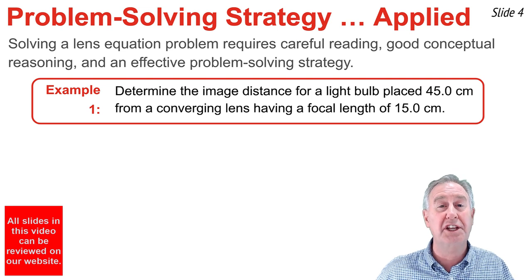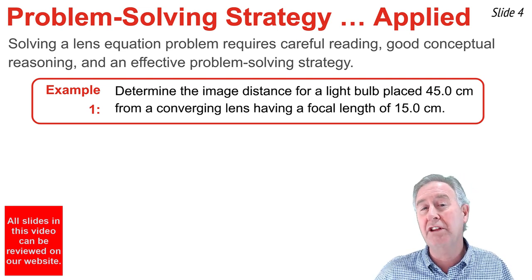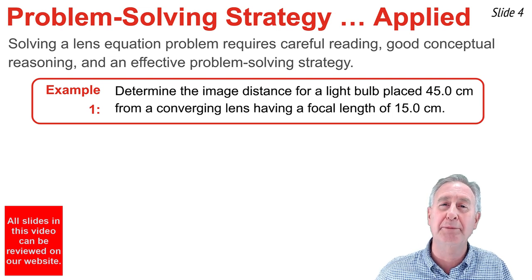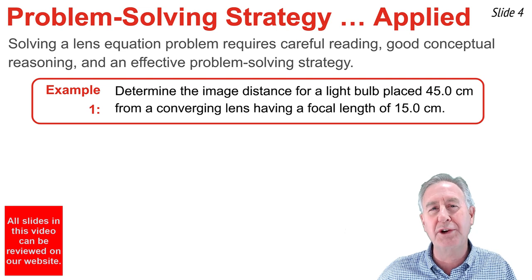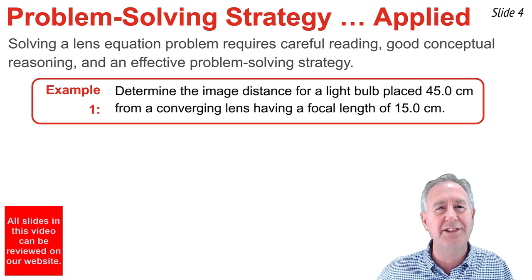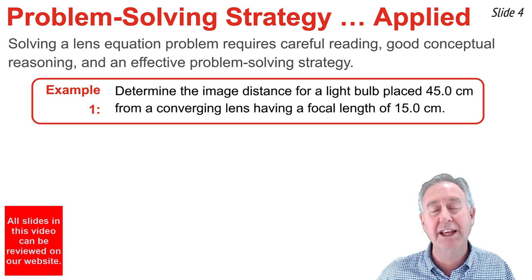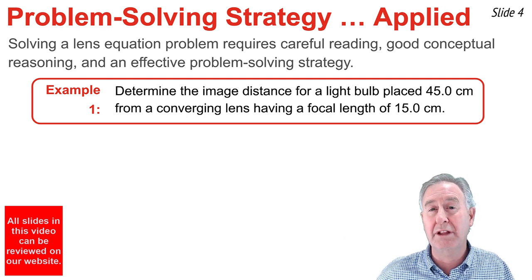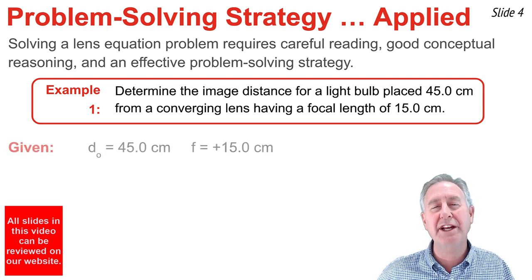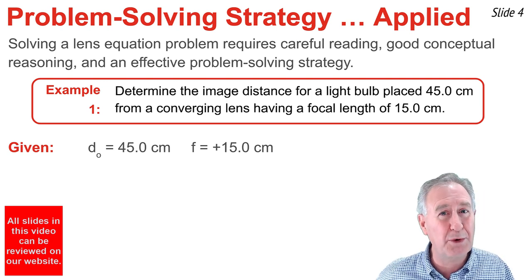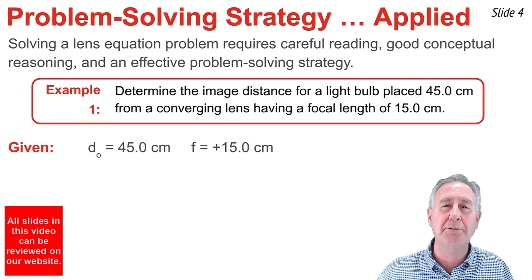The first step involves reading the problem carefully to extract numerical values that relate to quantities within the lens equation. I want to determine the image distance for a light bulb that's 45.0 cm from a converging lens with a focal length of 15.0 cm. In step two, I identify given values: dO = 45.0 cm, and f = +15.0 cm, positive since it's a converging lens.